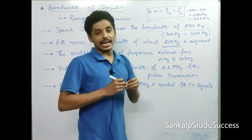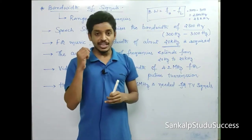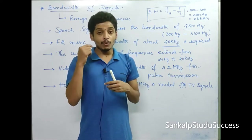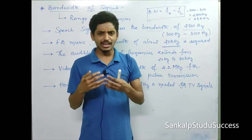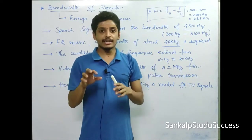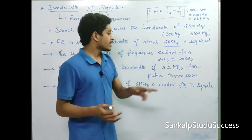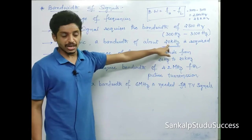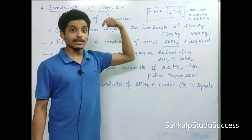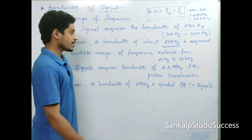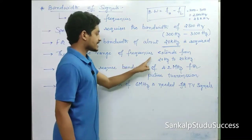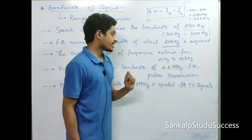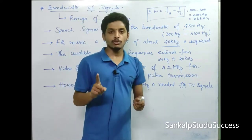Music is produced by instruments played in different modes at various frequencies. The audible range of frequencies extends from 20 Hz to 20 kHz.